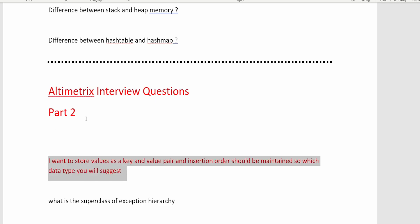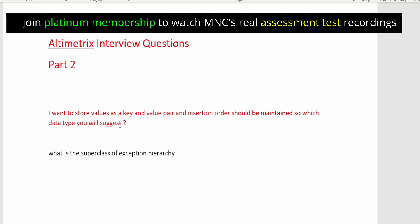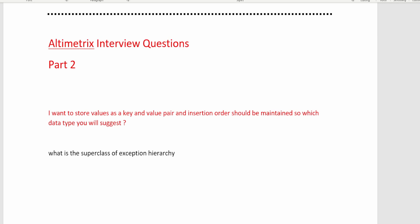The first question: I want to store values as a key-value pair and insertion order should be maintained — which data type would you suggest? If you think about key-value pairs, the first thing that comes to mind is Map. Now, which implementation of Map? There are multiple options: HashMap, ConcurrentHashMap, HashTable (a legacy class), LinkedHashMap, and TreeMap.